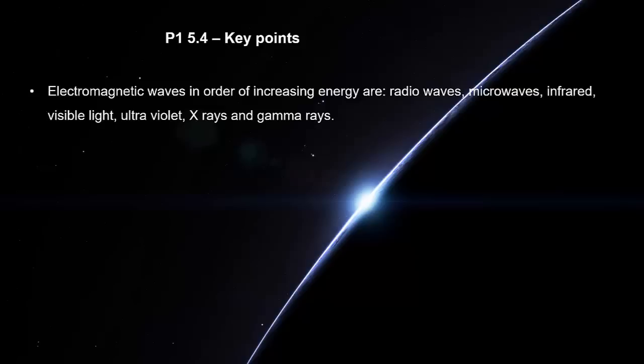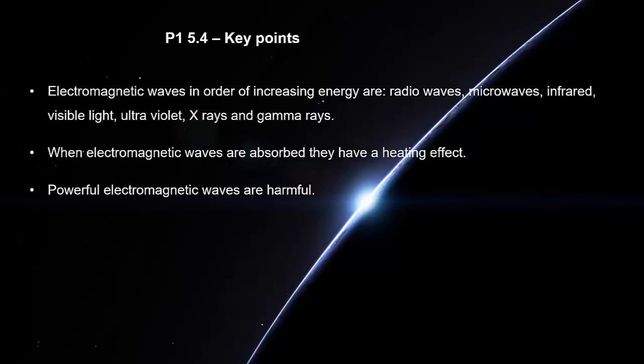Electromagnetic waves in order of increasing energy are radio waves, microwaves, infrared, visible light, ultraviolet, x-rays and gamma rays. When electromagnetic waves are absorbed, they have a heating effect. Powerful electromagnetic waves are harmful. Metal reflects light and infrared radiation.